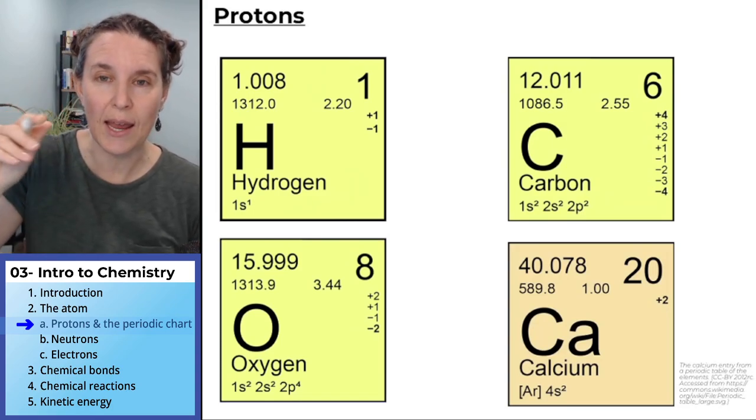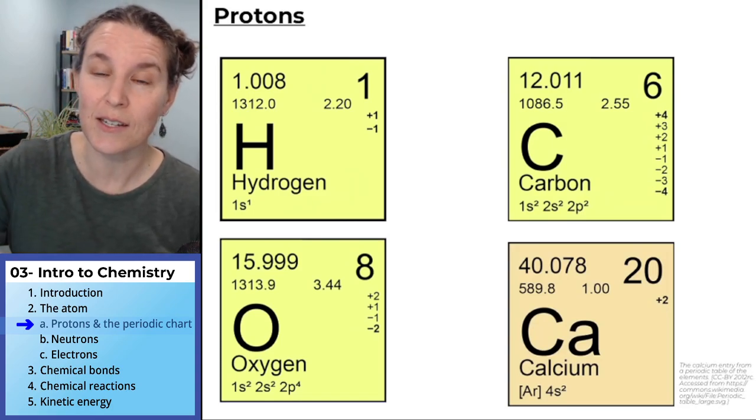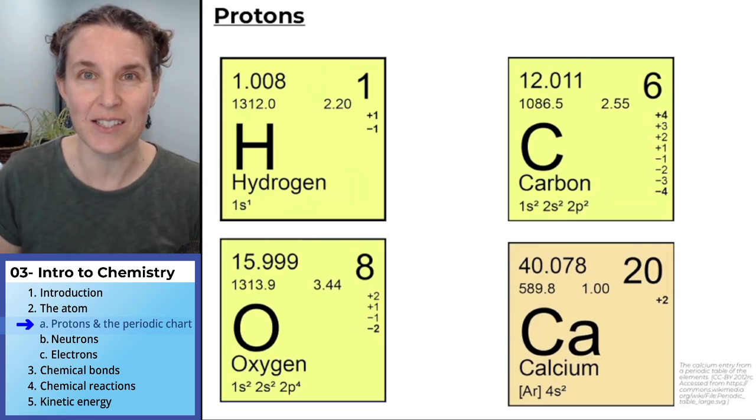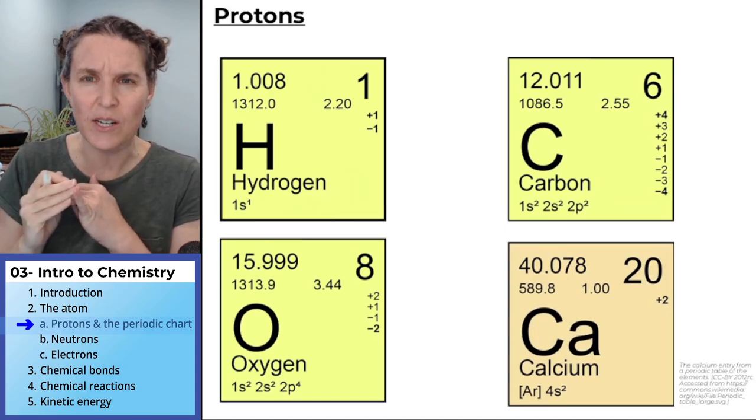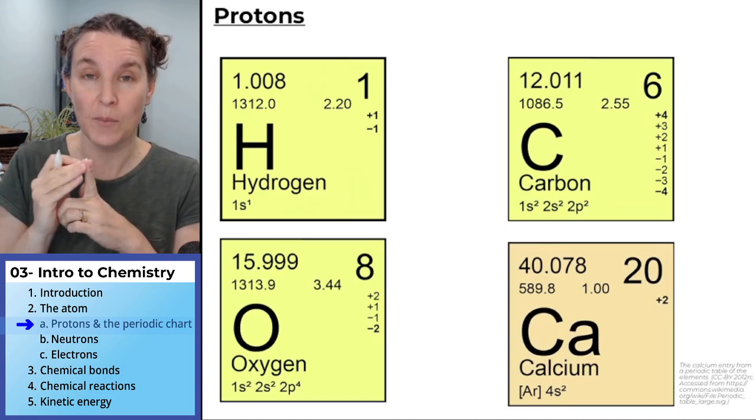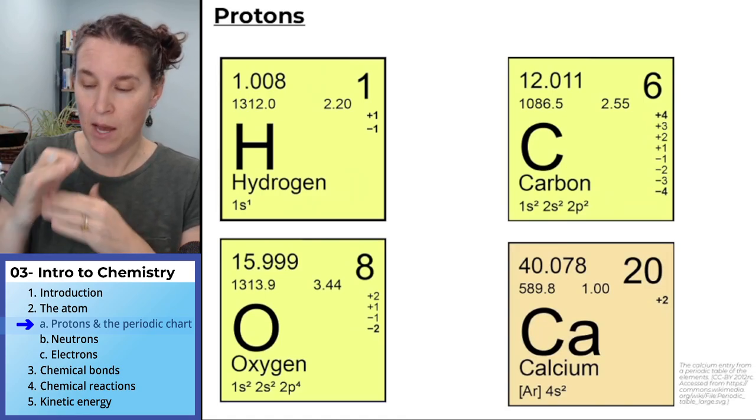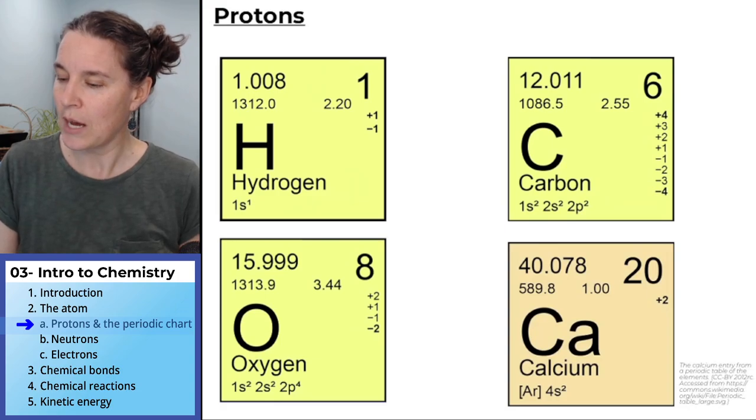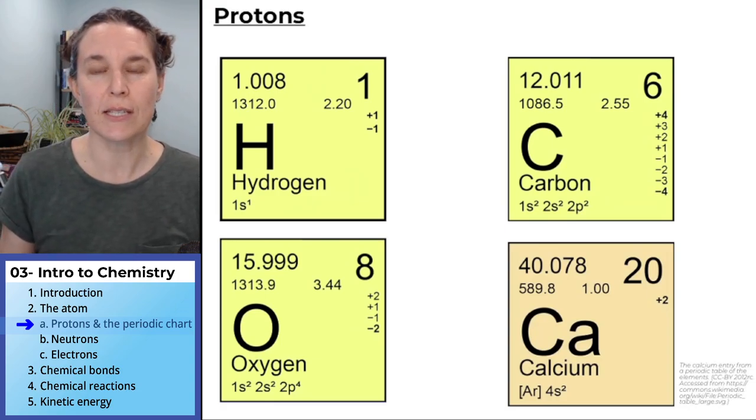These are four of those elements that are going to be familiar in living systems. Go ahead and push pause and decide how many protons are in each one of these elements: hydrogen, carbon, oxygen, and calcium. Push pause, holler out, whatever you'd like to do, and let's see if we can figure this out.